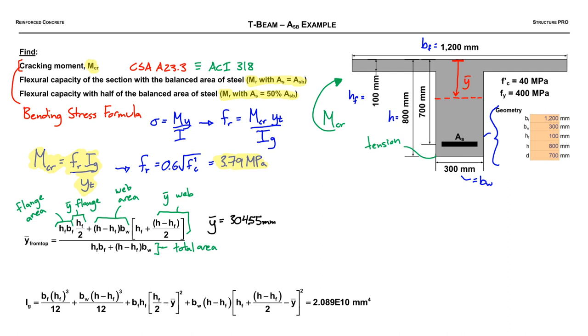Then we can solve for Y bar, so it's about 305 millimeters. We can back calculate what YT will be because as I'm showing here, Y bar is the distance from the top to the centroid, but YT is the distance from the centroid to the tension face, and that's the value we need for our MCR equation. Lastly, the last piece of the puzzle we need is this gross moment of inertia. It's gross because it's referring to the entire thing. So we got the flange moment of inertia of the web and the two parallel axis parts. It's a huge huge number, so we use some scientific notation.